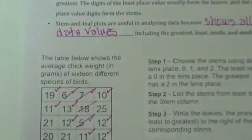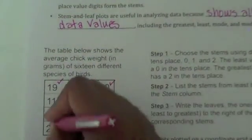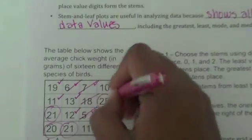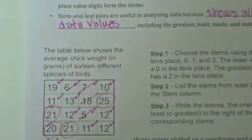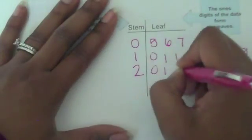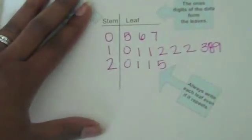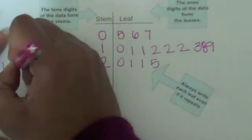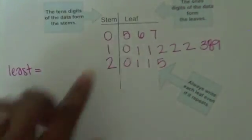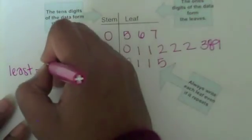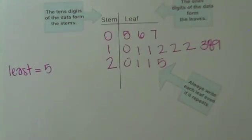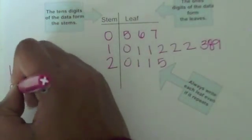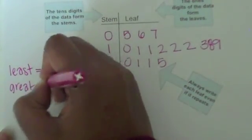Last, take care of our twenties. We've got 20, two 21s, and 25. So next to stem 2, we write 0, 1, 1, and 5. To read this: the least number is the very first one — stem 0 with leaf 5, so the least chick weight is 5. The greatest is the last one — stem 2 with leaf 5, so the greatest weight is 25.